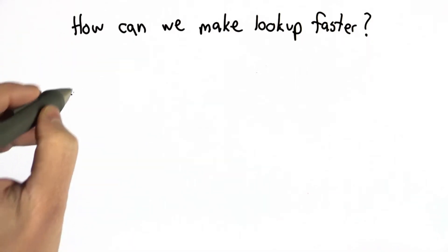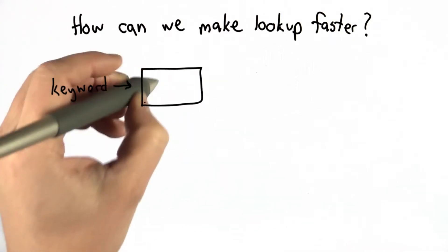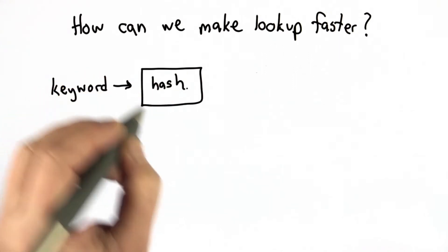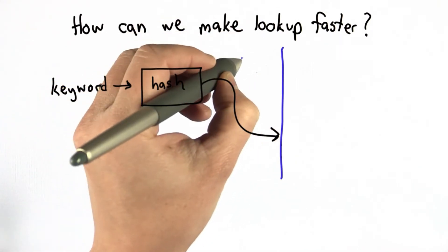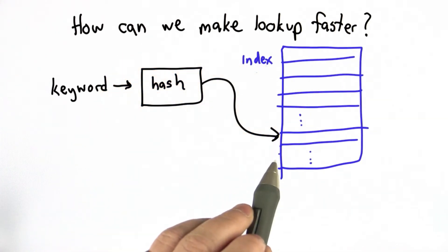What we want is something that will allow us, given a keyword, we're going to have some function that tells us where it belongs. We're going to call that a hash function. That tells us where in the entry to look. And so instead of having to look through the whole index, the hash function will tell us where that entry belongs.